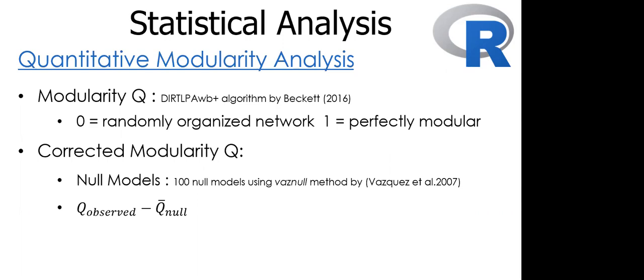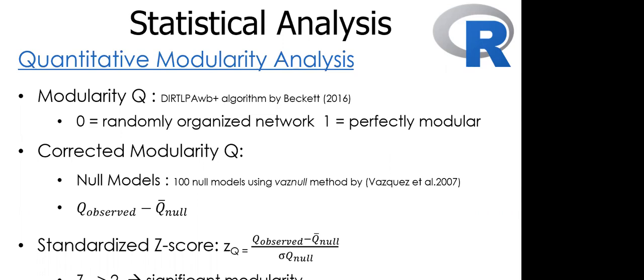This was to correct the absolute value of modularity Q by computing the difference between the value of the observed network and the mean value obtained from the 100 null models. I then standardized modularity Q into a z-score in order to assess the significance of the modularity in the network. This measures how many standard deviations the observed modularity Q is from the mean modularity Q of the null models. Values larger than 2.0 indicate that the observed network is significantly modular.